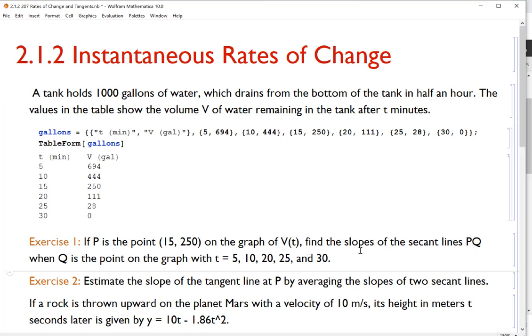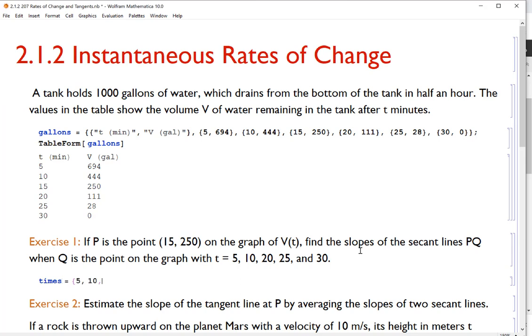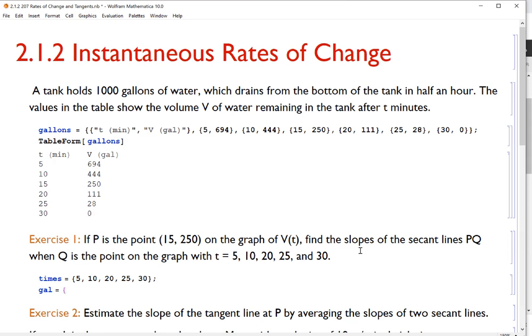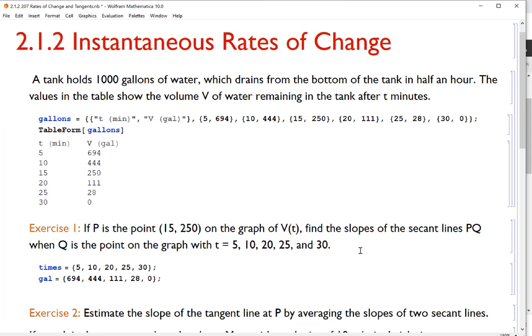All right, so what I'm going to do is I'm going to make a list of times 5, 10, 20, 25, 30. And I'm also going to make a list of, I'll call my gal for my gallons at those corresponding times based on my table. So 694 for 5, 444 for 10, and so on. And be sure to skip the 250, right, because we're not including time equals 15. Okay, and then what I'm trying to do here is calculate secant slope. So I'm going to make another function that I'm calling sec slope. And how do you make a secant slope? Well, that's using the slope formula from algebra.